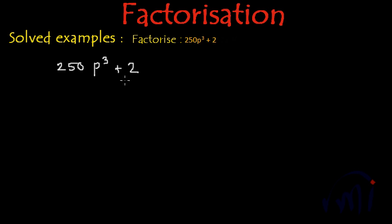If we see carefully, this constant is 2 and this coefficient of p³, both of them are even numbers. So let me take out 2 as common and inside the bracket we will have 125p³ + 1.